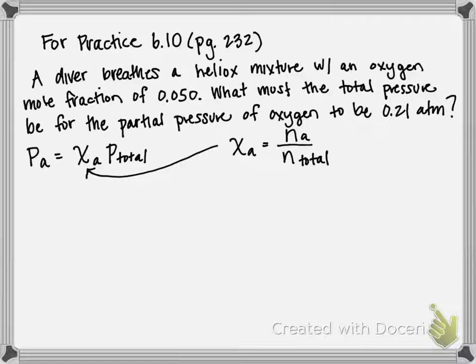So the mole fraction of a gas is represented with this little x-looking symbol right here, is equal to the moles of the component gas over the moles of the total gas mixture. So another way to find the partial pressure of a gas, let's say A for example, is equal to its mole fraction times the total pressure contained in the system.